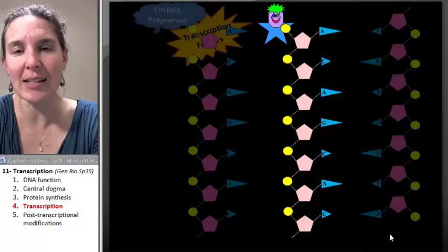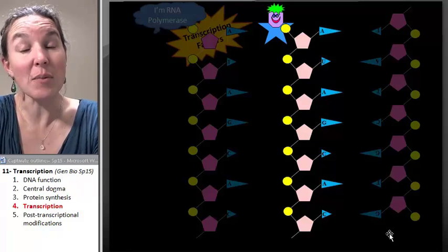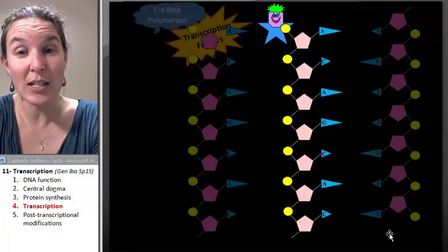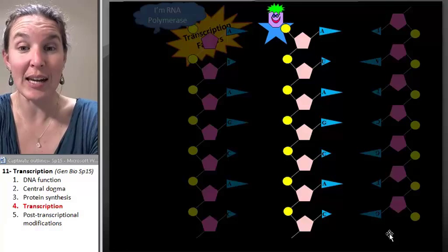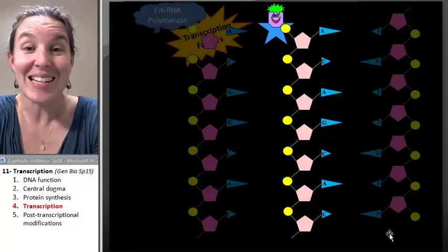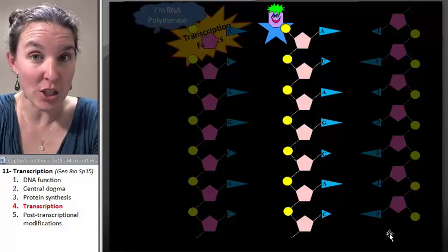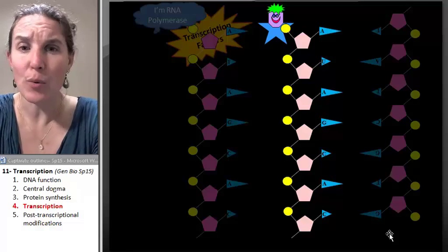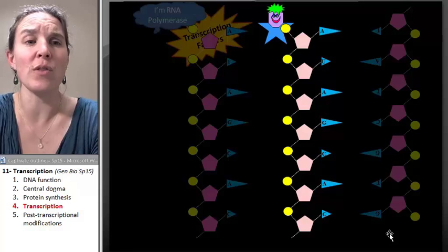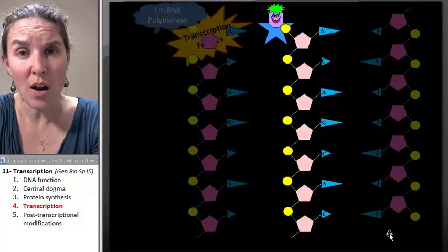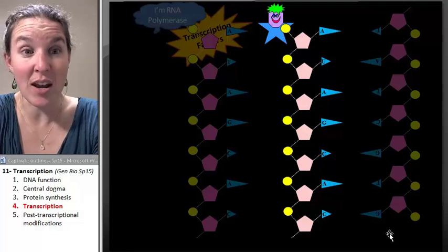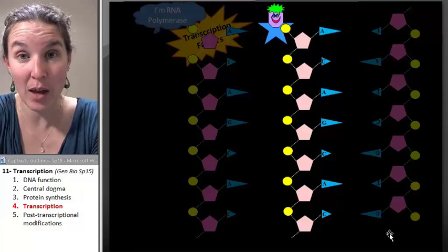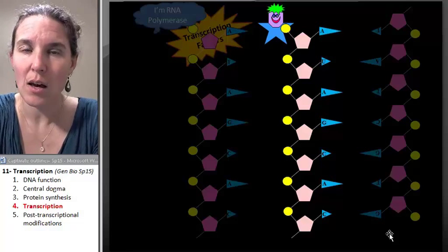That's not exactly the end of the story. There are some things that we're going to have to do to the messenger RNA in order to get it ready. These modifications are modifications that happen in eukaryotes. Prokaryotes don't do these modifications. So their messenger RNA molecules are not nearly as hip and cool as ours.